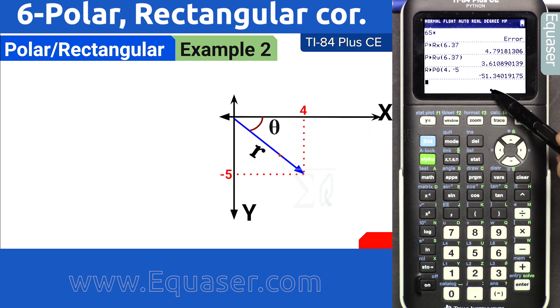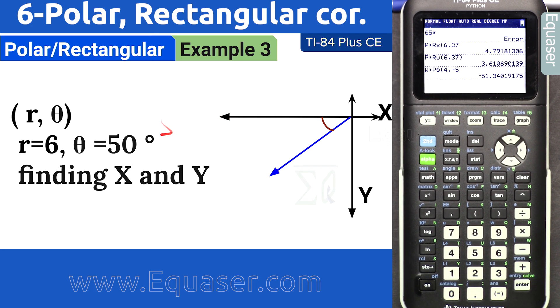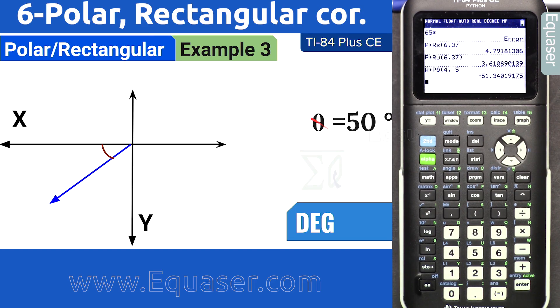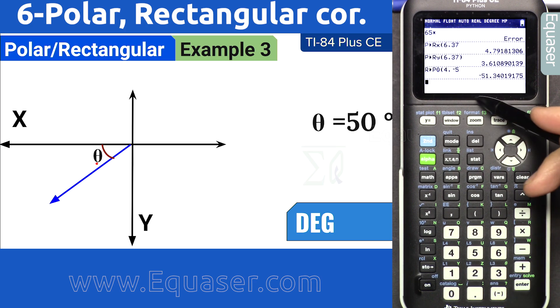Now we have theta 50 degrees and r 6. We want to find x and y. This 50 degrees that you see here is not 50 degrees that you will enter in calculator.